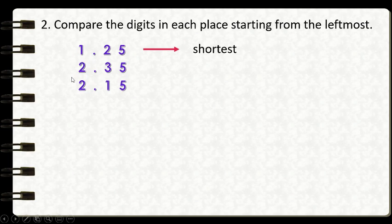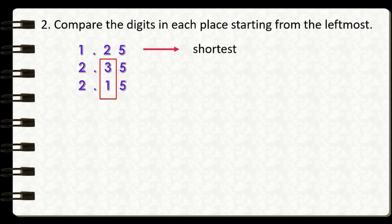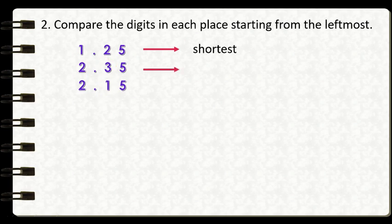Now we are going to compare the remaining numbers: 2 and 35 hundredths and 2 and 15 hundredths. Since we are done with the ones place, we will move to the next place value to the right — that's the tenths place. We can see that 3 is greater than 1, so it follows that 2 and 35 hundredths is the longest ribbon among the three.